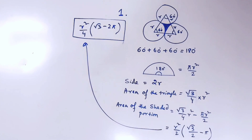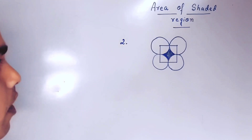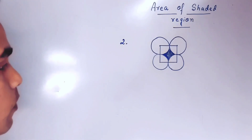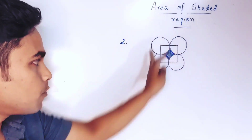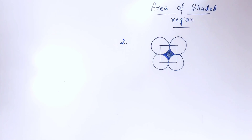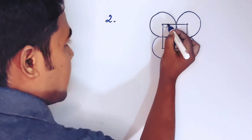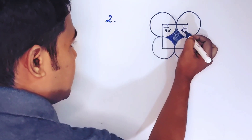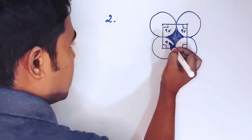Now in diagram two, let us find the formula for the area of the shaded portion. Here we have joined the four centers of four circles to form a square. Each interior angle of the square is 90 degrees — this angle is 90°, this angle is 90°, and these two are also 90°.